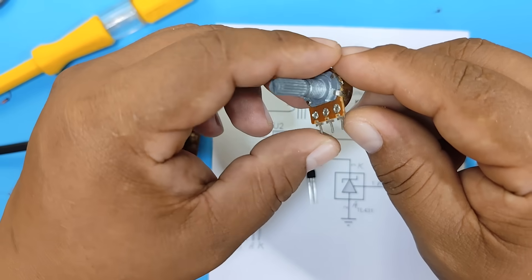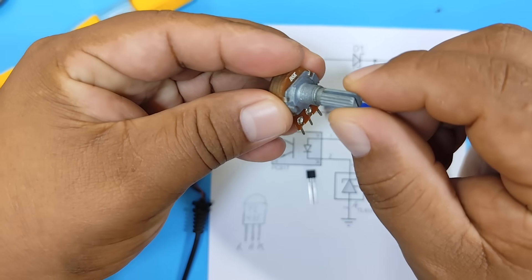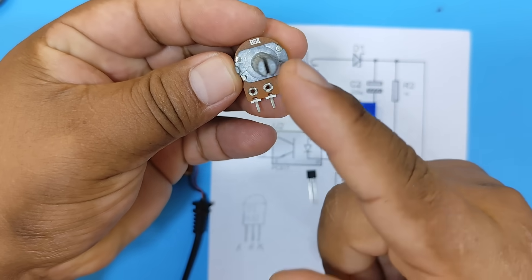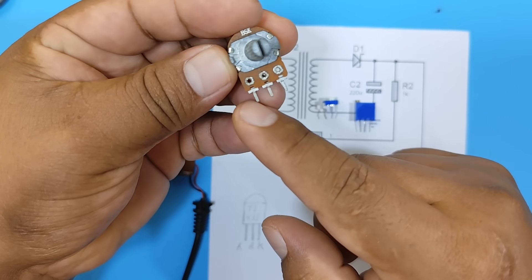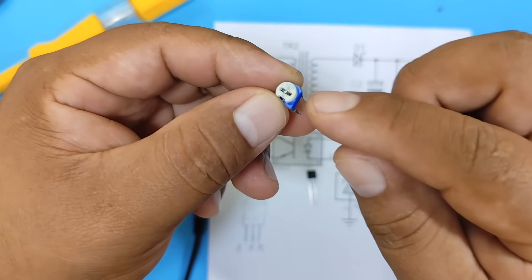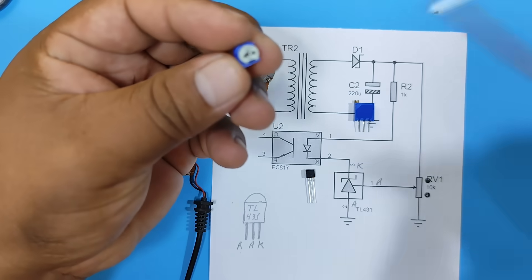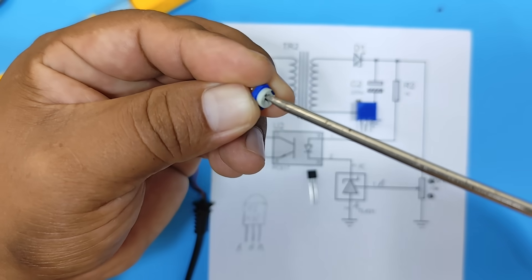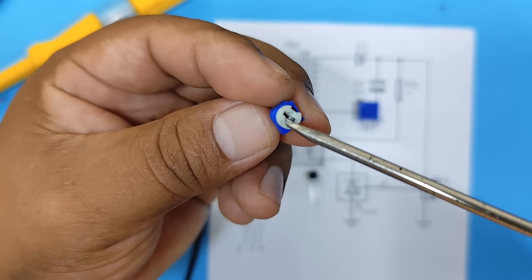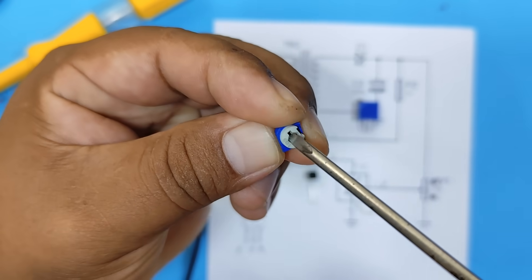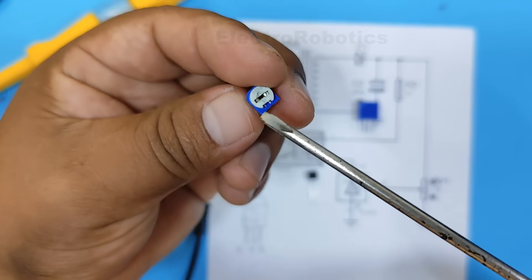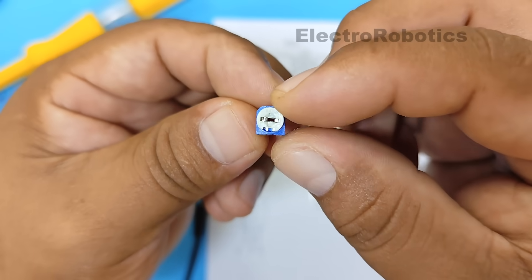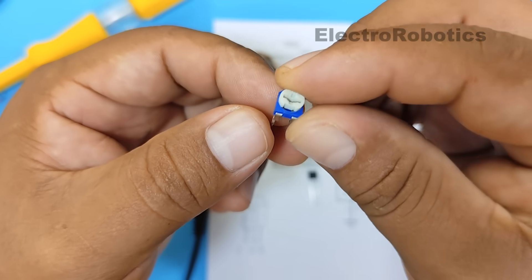Now before making the connections, we have to set the potentiometer to a precise midpoint. For safety, I'm going to use this trimmer. I can adjust its value with a screwdriver. There, it would be at a midpoint.